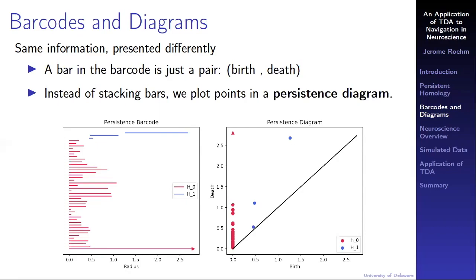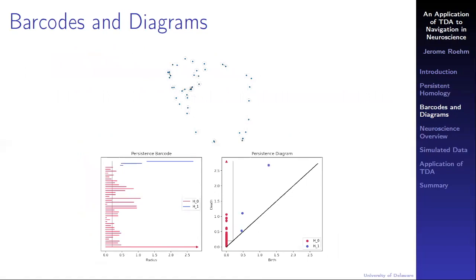In the diagram, points far away from the diagonal correspond with long significant bars, whereas points close to the diagonal, whose birth and death times are close, correspond to short-lived bars in the barcode. I'll scan through various R values again and you can follow along in the barcode and diagram. A hole is currently active in the barcode if it intersects the gray line indicating the given radius. In the diagram, the hole is alive if it's in the upper left quadrant because it's born before the radius and dies after the given radius.